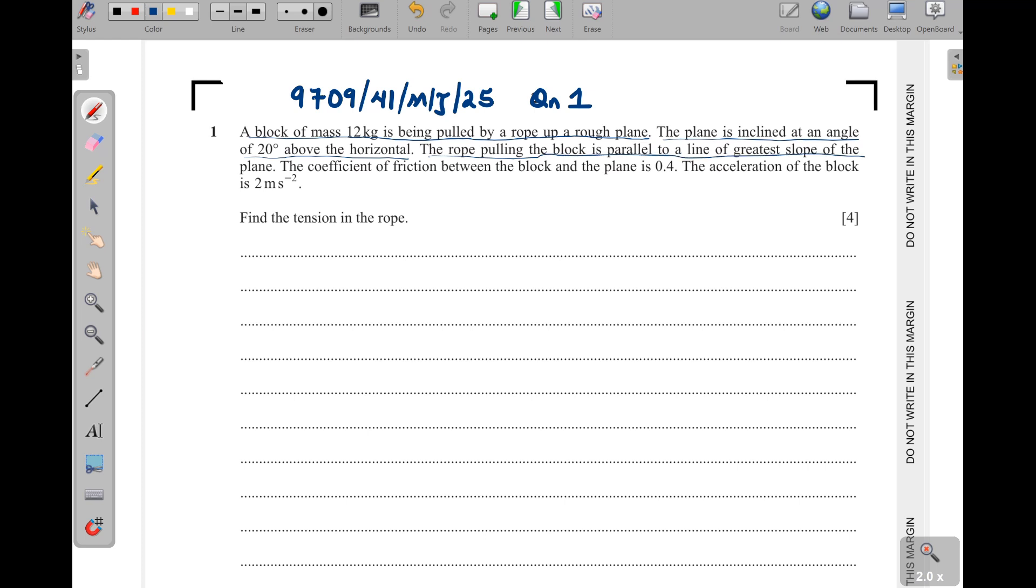parallel to the line of greatest slope of the plane. The coefficient of friction between the block and the plane is 0.4. The acceleration of the block is 2 meters per second squared. Find the tension in the rope.